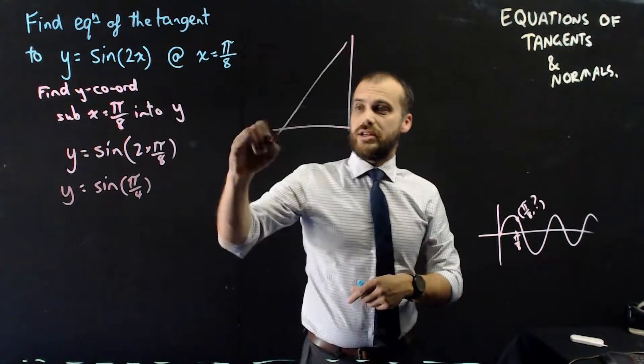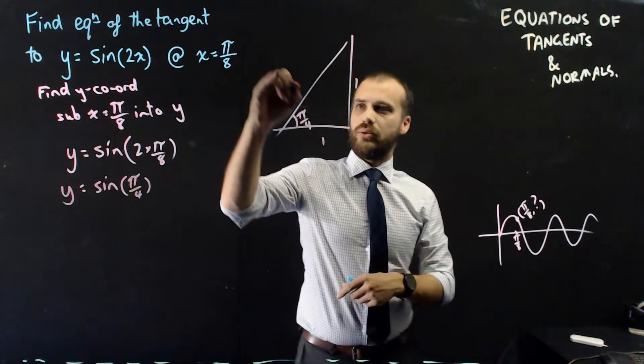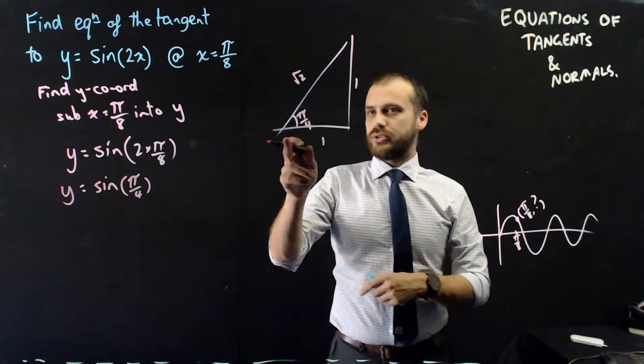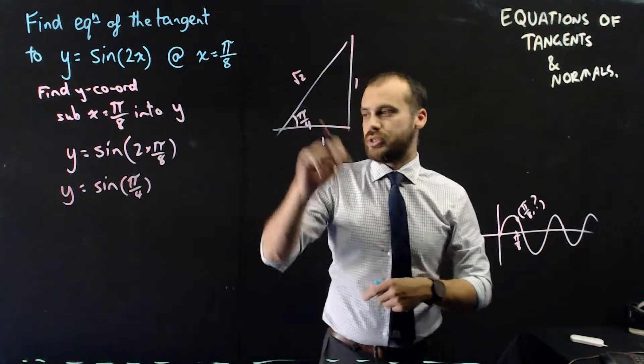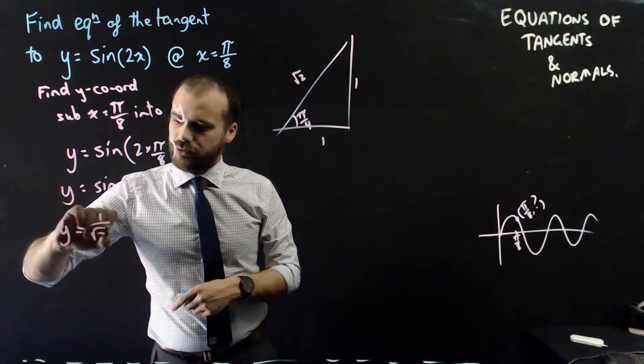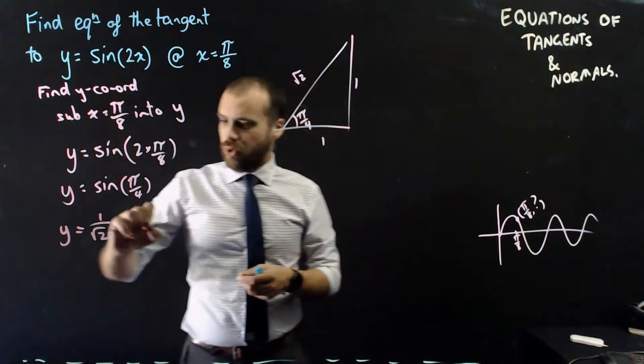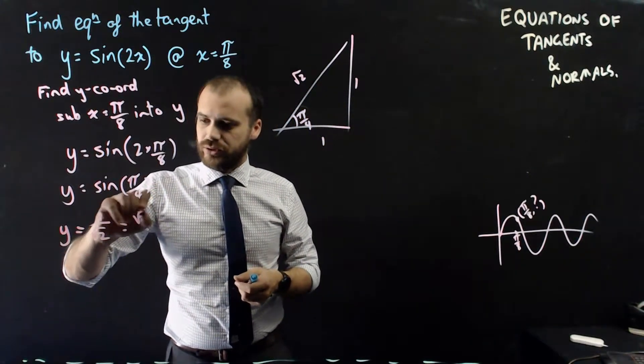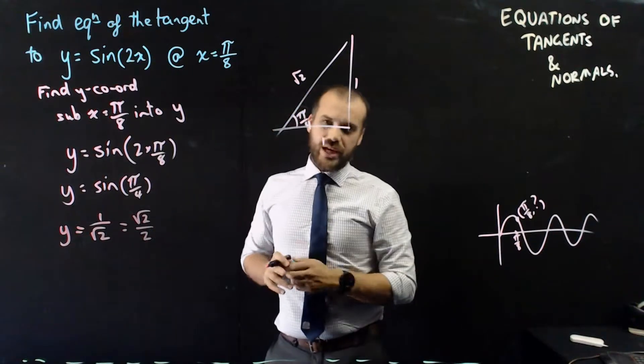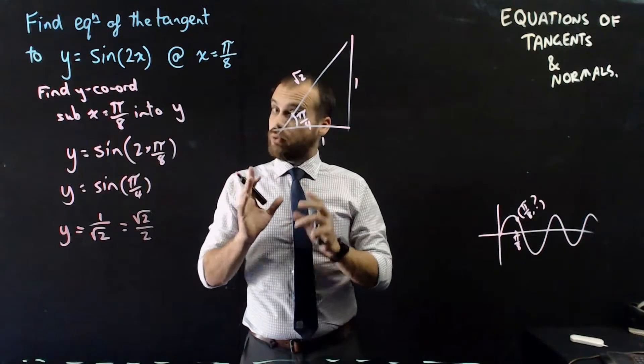You draw yourself your little standard triangle. π on 4, 1, 1, root 2. So sine π on 4 is equal to opposite over hypotenuse. y equals 1 on root 2. That's also got another version, which is also equal to root 2 on 2. So we can choose either of those values.